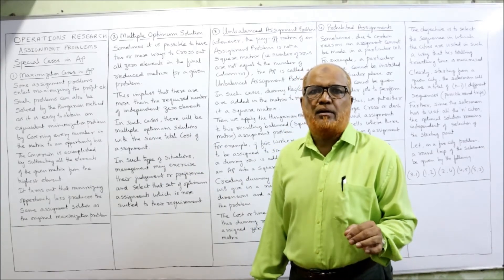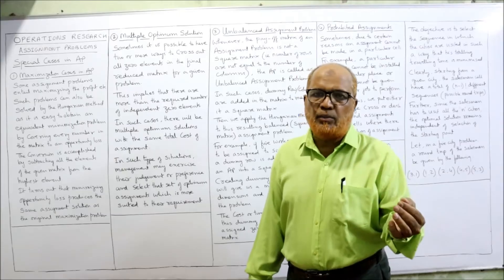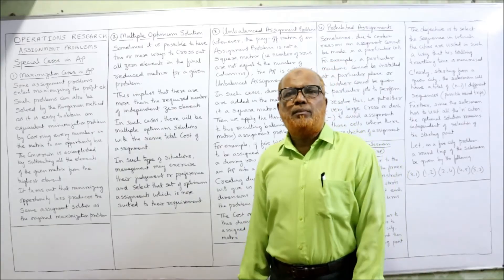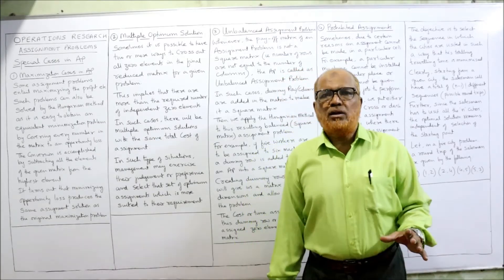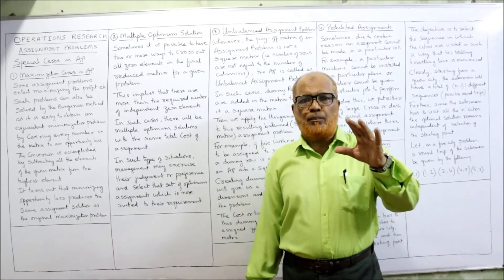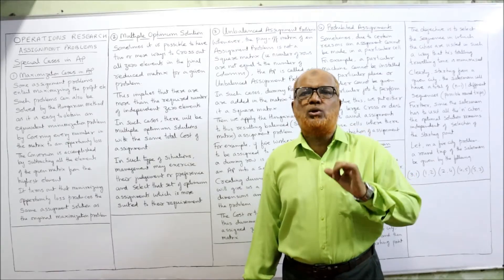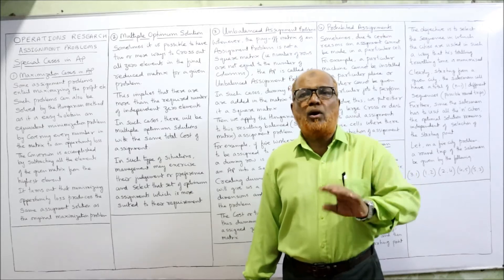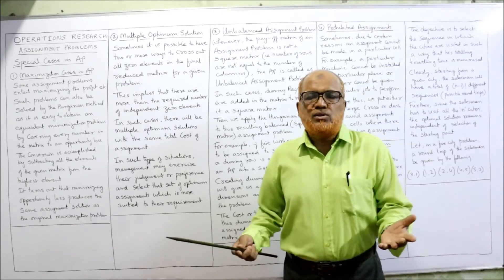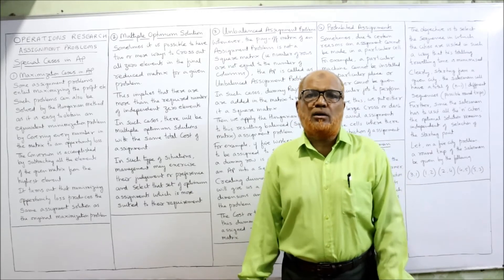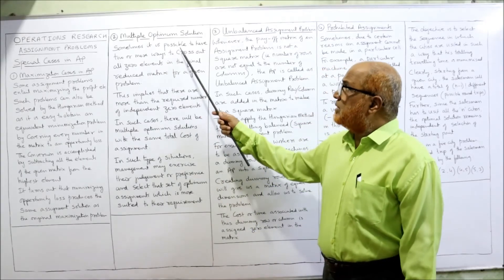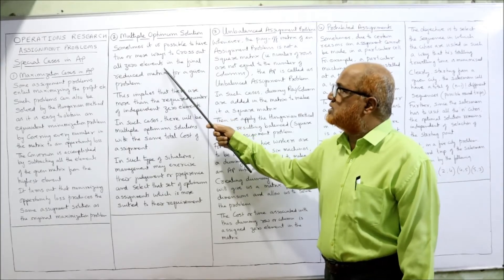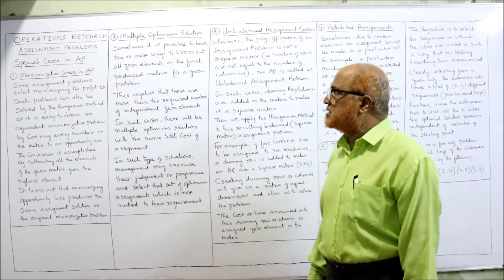The next special case is multiple optimum solutions. It is not necessary that a problem will always give only one solution. There are chances that the same problem may have multiple optimum solutions, and every solution will give the same total cost. Sometimes it is possible to have two or more ways of crossing out all the zero elements in the final reduced matrix of a given problem.